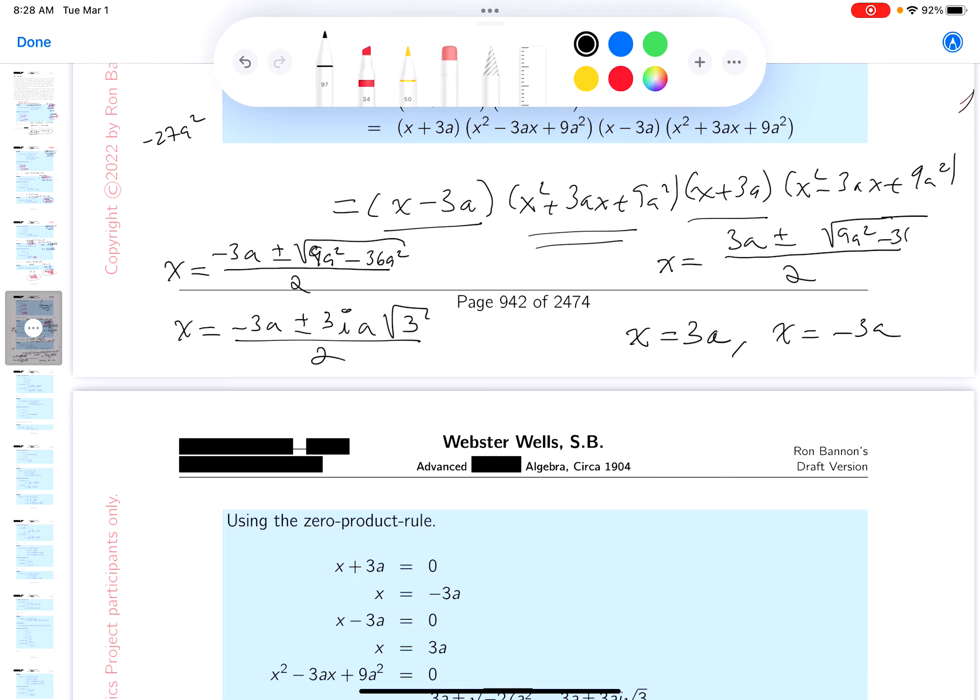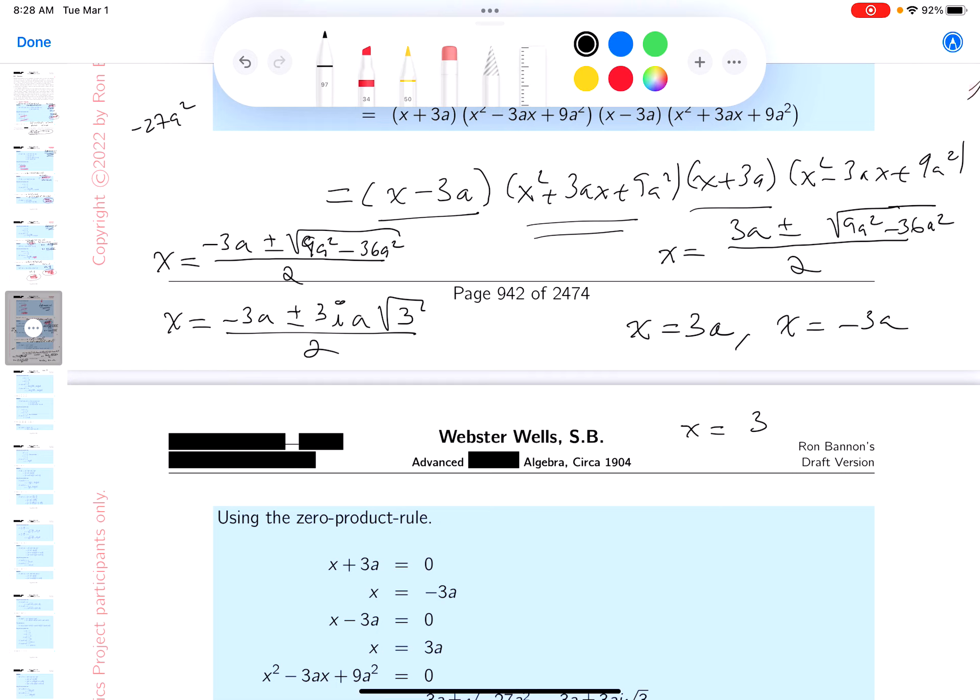which is going to be minus 36a². Really getting the same thing. 3a plus or minus 3ia√3 over 2.